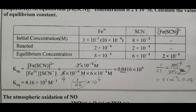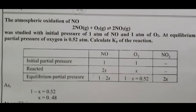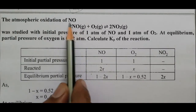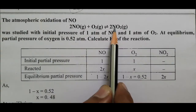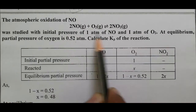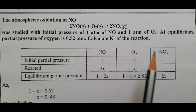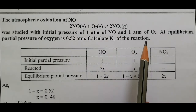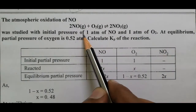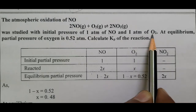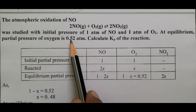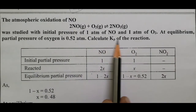Problem 2: The atmospheric oxidation of nitric oxide (NO). Nitric oxide undergoes oxidation to give nitrogen dioxide — this is the first step in the Ostwald method for preparation of nitric acid. Initial pressure: 1 atm of NO and 1 atm of O₂. At equilibrium, the partial pressure of O₂ is 0.52 atm. Calculate Kp of the reaction.